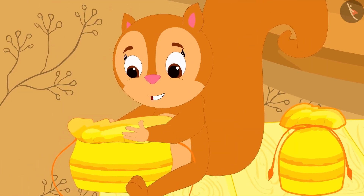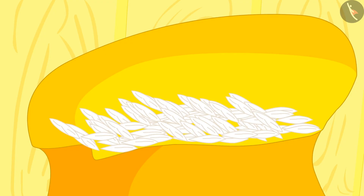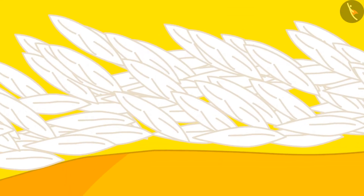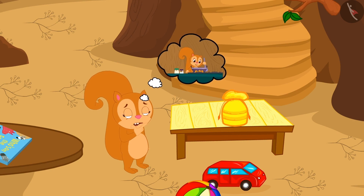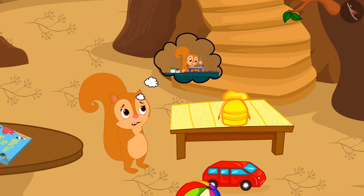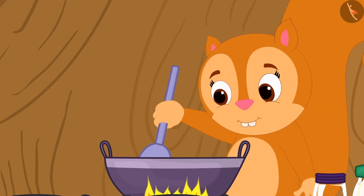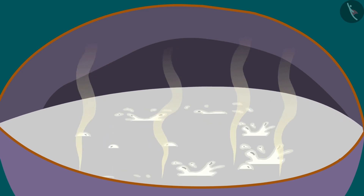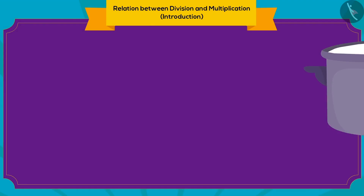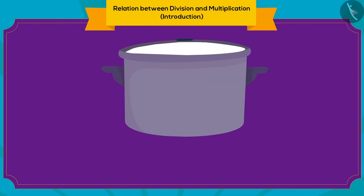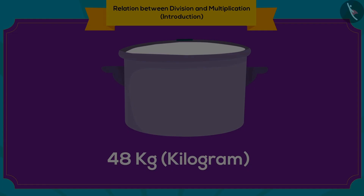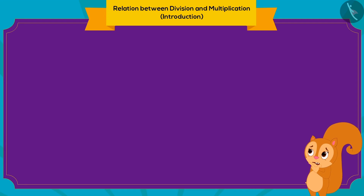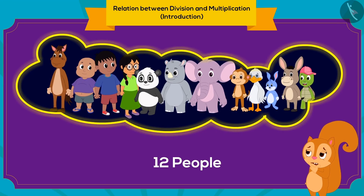Now Chanda opened her second pouch and found some rice grains in it. She thought she could cook some kheer for herself. But as soon as she began cooking, it kept on increasing in quantity. At last, from those rice grains, Chanda managed to make 48 kg of kheer. She needed to divide that kheer among 12 people in the village.